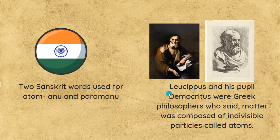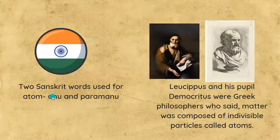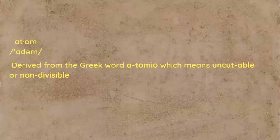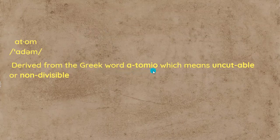According to Indian philosophers, two Sanskrit words can be used to describe an atom: 'anu' and 'paramanu', where anu means the smallest particle. Leucippus and his pupil Democritus were the Greek philosophers who said that matter was composed of indivisible particles called atoms. The word 'atom' is derived from the Greek word 'atomio', which means uncuttable or non-divisible.